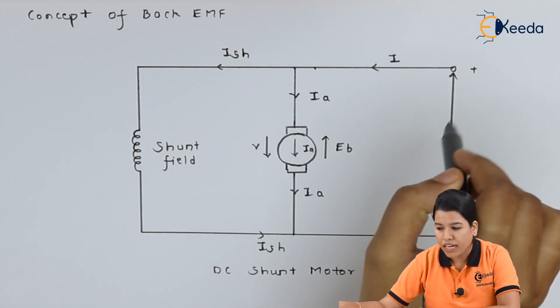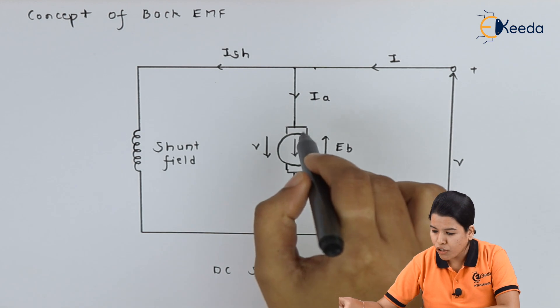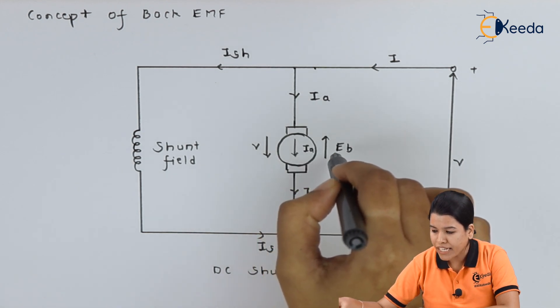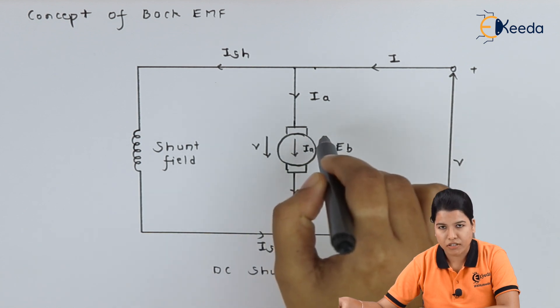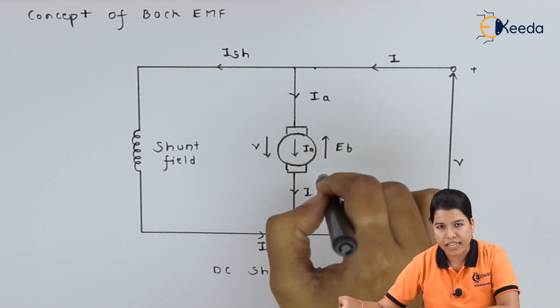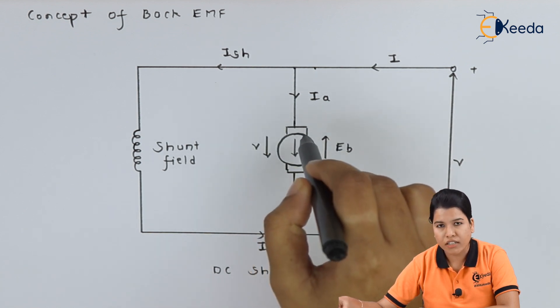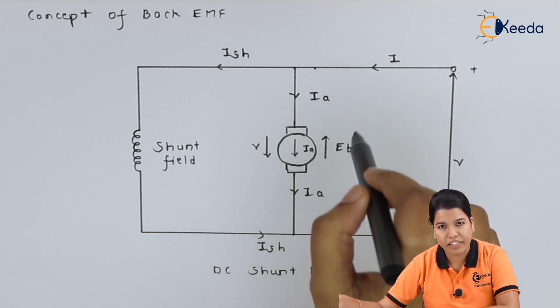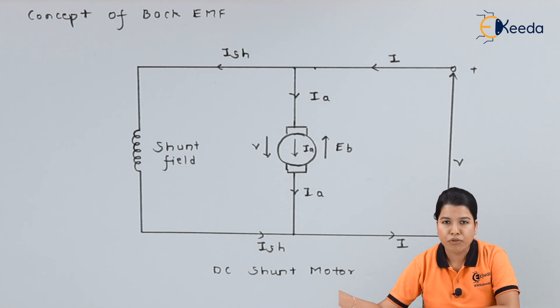When the supply is given and current starts to flow, the voltage causes the induction of back EMF Eb in the armature. This is because of the fact that the armature conductor cuts the magnetic field.